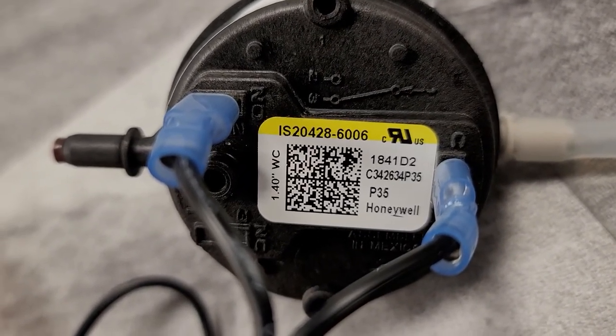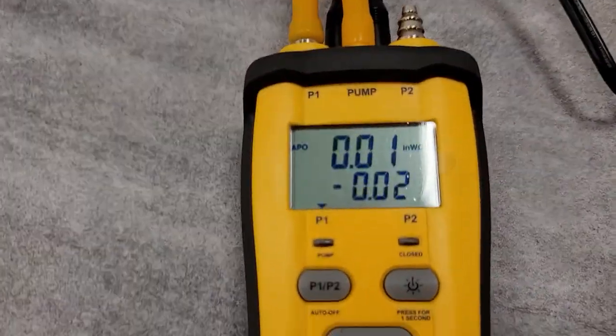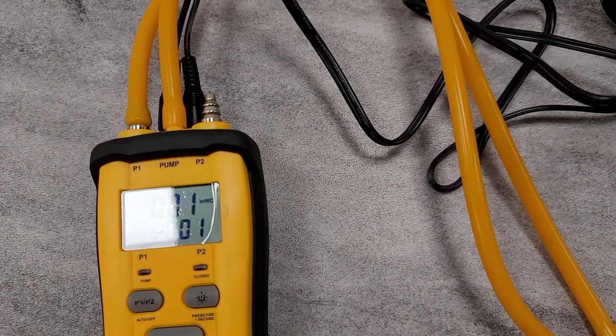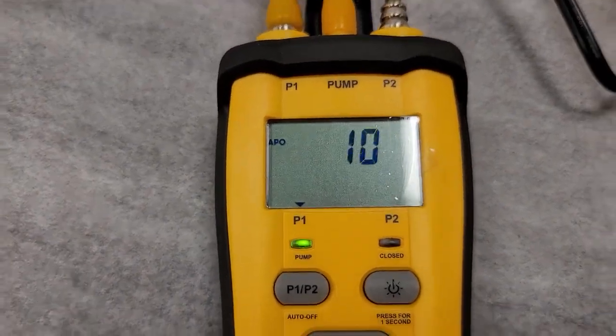It says it's rated for 1.40 inches water column. What I do is press the test button on here, and then the closed indicator right here.